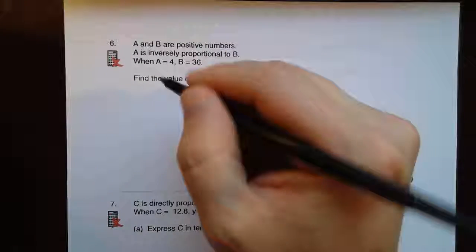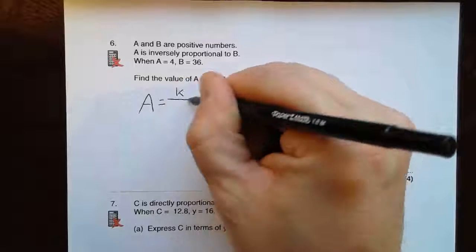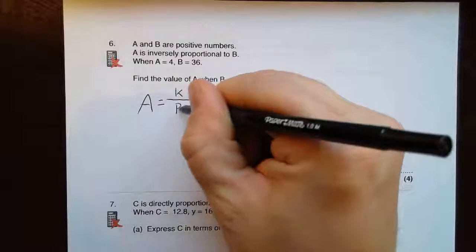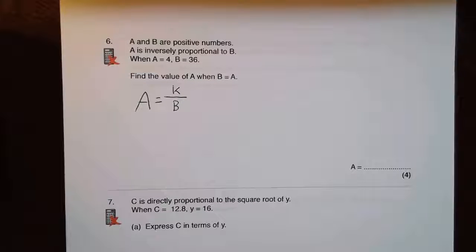So nice and straightforward this one. A is inversely proportional so equals k over B. And not to the square of B, just nice and straightforward like that.